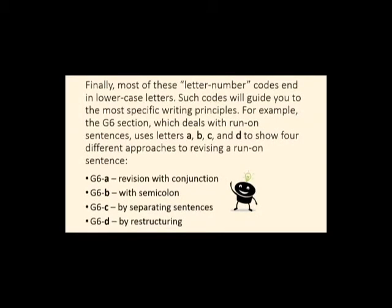And then finally, most of these letter-number codes end in small lowercase letters, and these codes guide you to the most specific writing principles. For example, the G6 section—that's the one that deals with run-on sentences—uses lowercase letters a, b, c, and d to show you four different approaches to revising a run-on sentence, which you can see below.